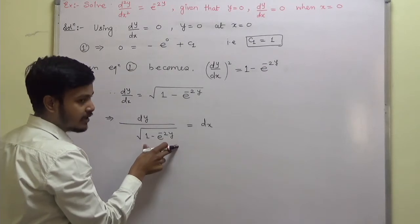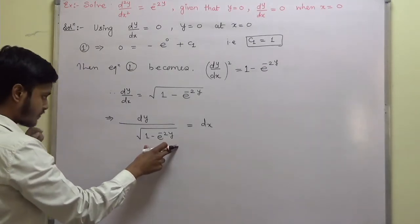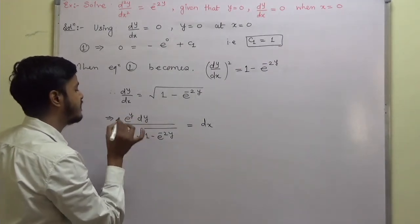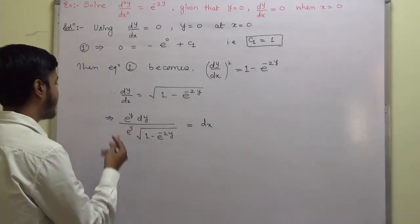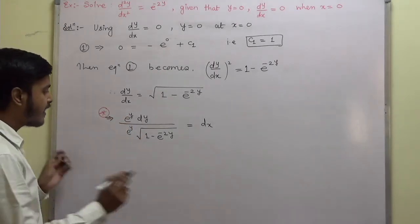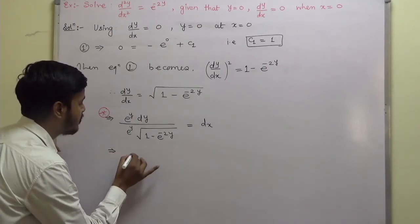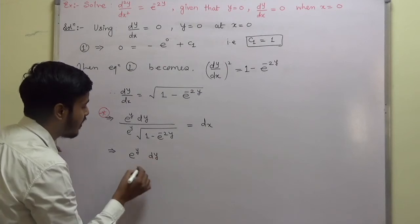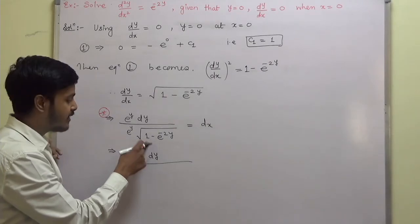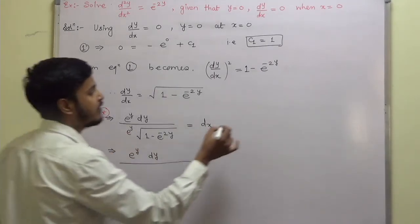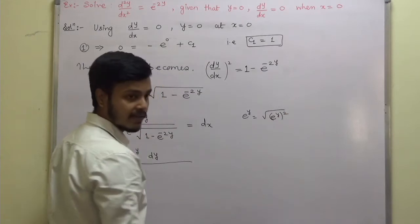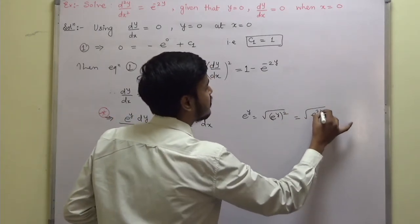This is not easily solvable, so I am going to adjust. I will multiply and divide by e^y. Marking this as the adjustment step: multiply and divide by e^y. This gives e^y·dy in the numerator. Taking e^y inside the square root, e^y can be written as √(e^(2y)), so the denominator becomes √(e^(2y) − e^(2y)·e^(-2y)).